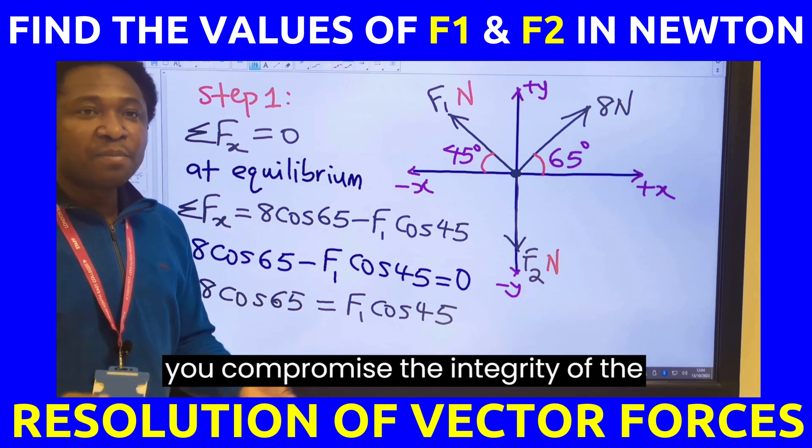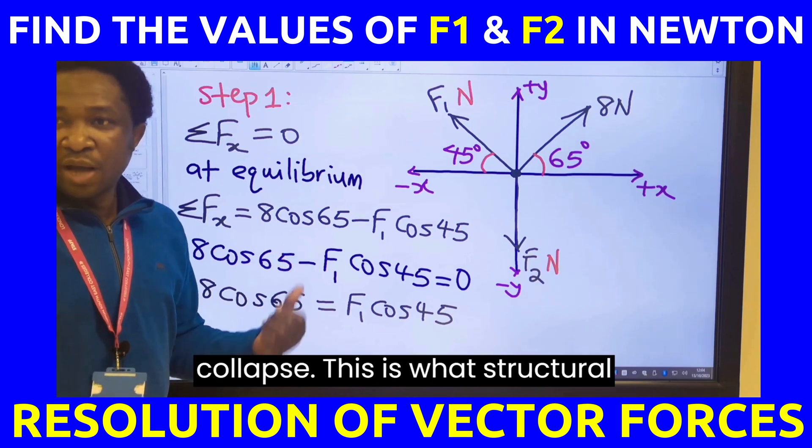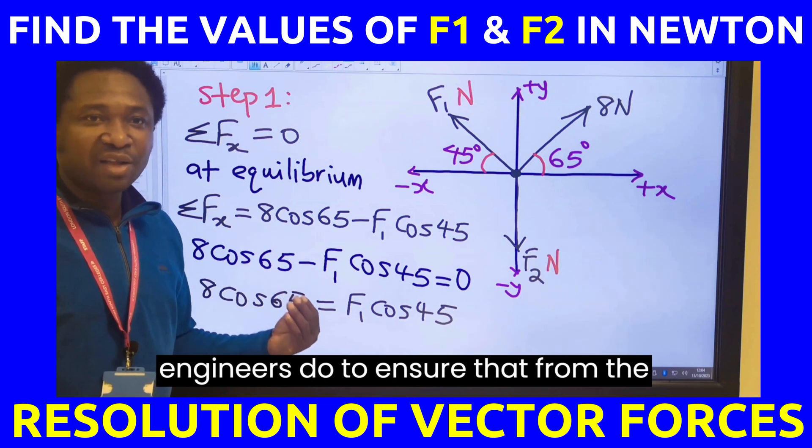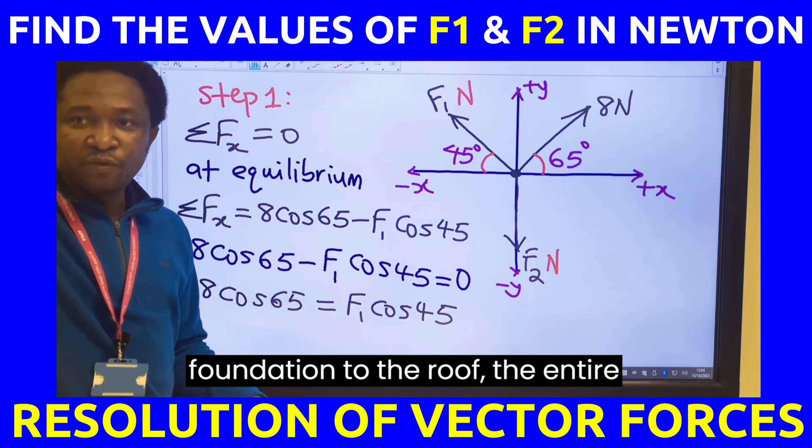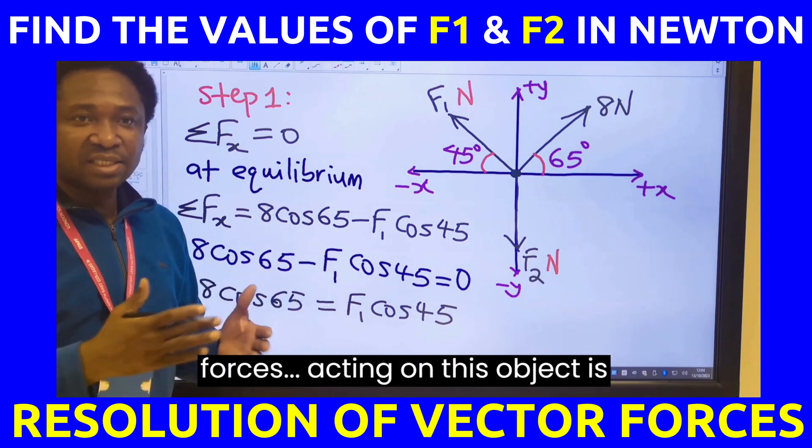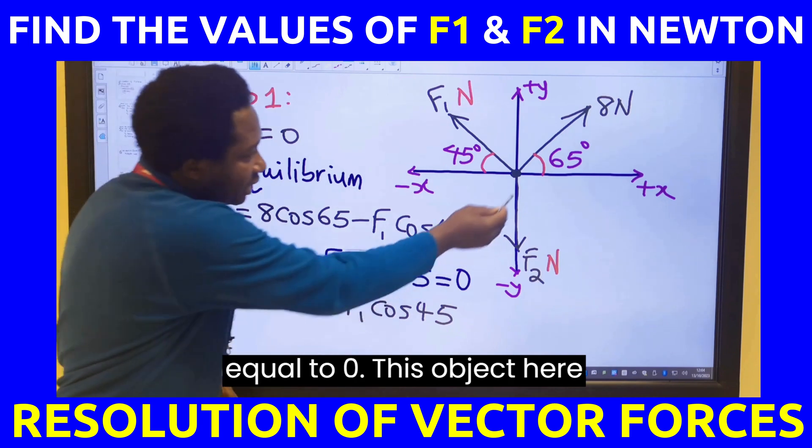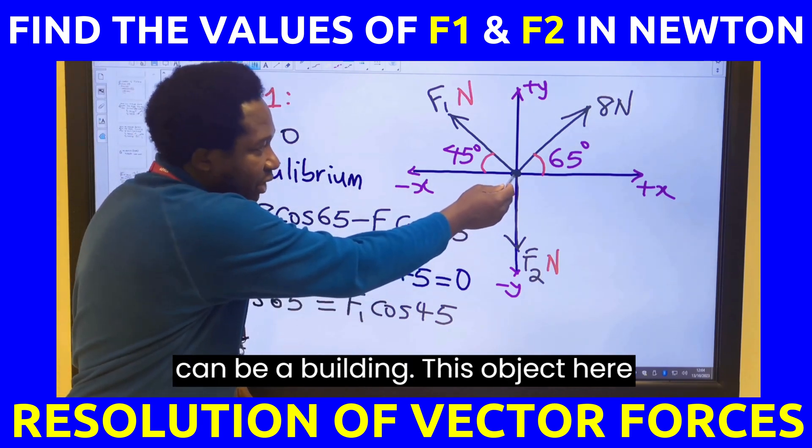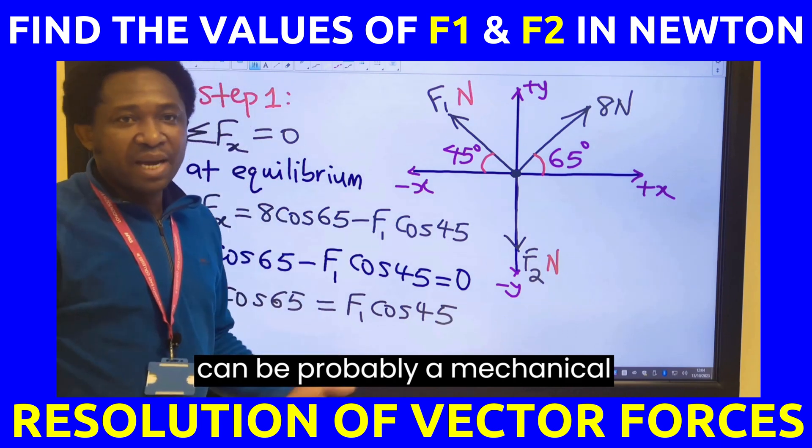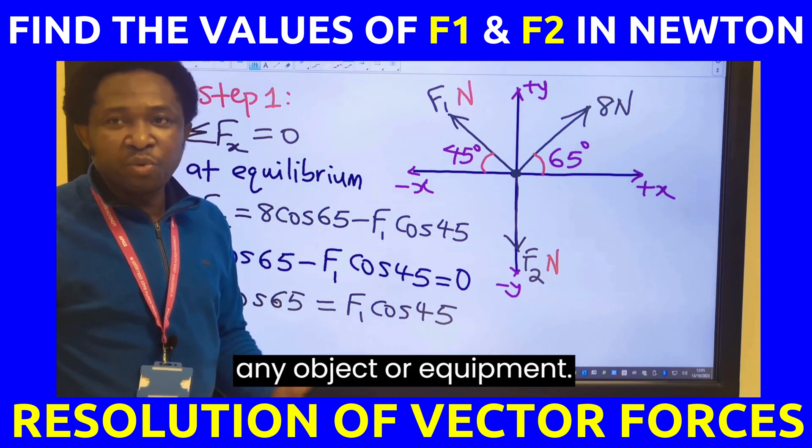If you compromise the integrity of the equilibrium, the structure will collapse. This is what structural engineers do to ensure that from the foundation to the roof, the entire structure is stable and all the forces acting on this object is equal to 0. This object here can be a building, a mechanical device, or any object or equipment.